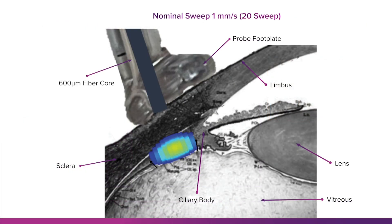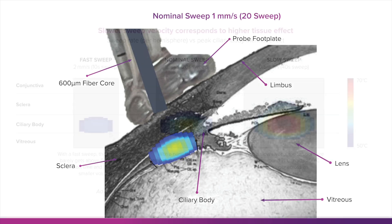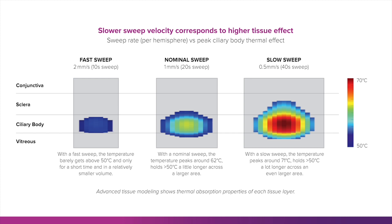Here, the tissue temperature increase is illustrated in relation to the placement of the Micropulse P3 Probe. As shown in this image of advanced tissue modeling, a fast sweep of the Micropulse P3 Probe causes minimal temperature rise. As the sweep speed is slowed, tissue temperature increases. The goal is to safely achieve the desired clinical effect without under- or over-treatment.